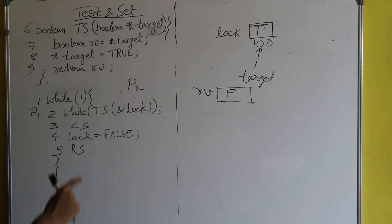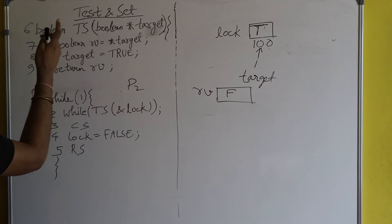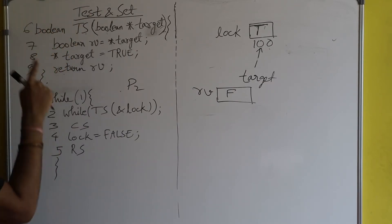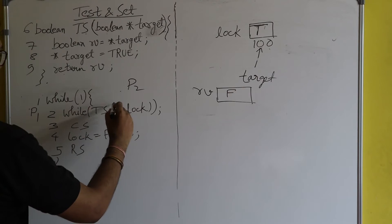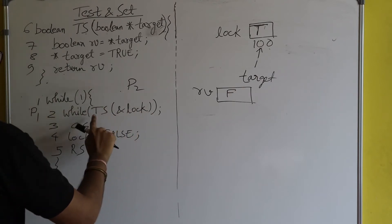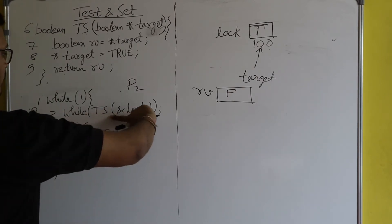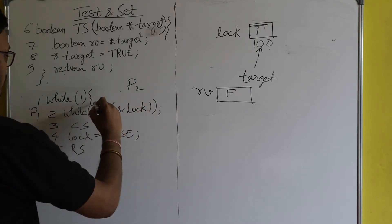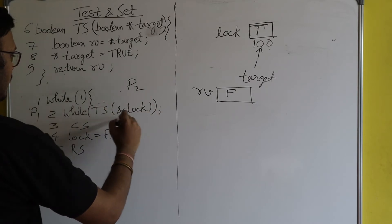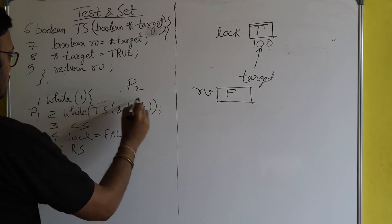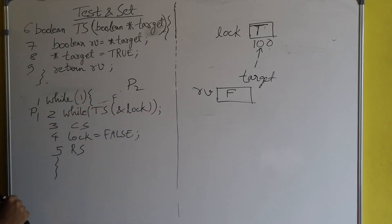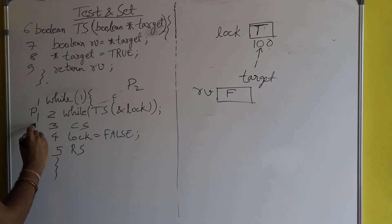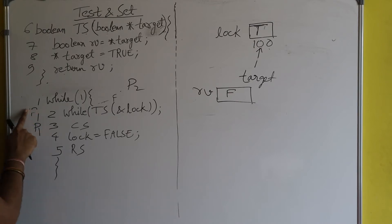rv (which is false) will be returned. So the TS function received the false value, making the overall condition false, so the while loop is broken and P1 gets entry inside the critical section. P1 is now at line number three.